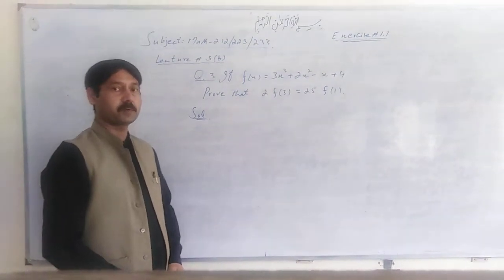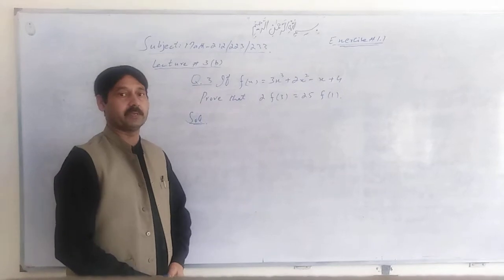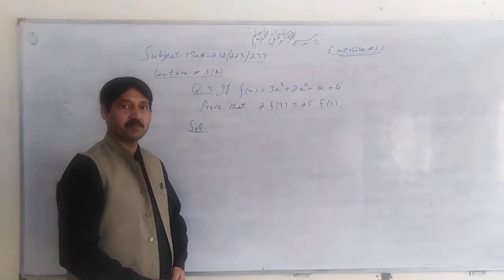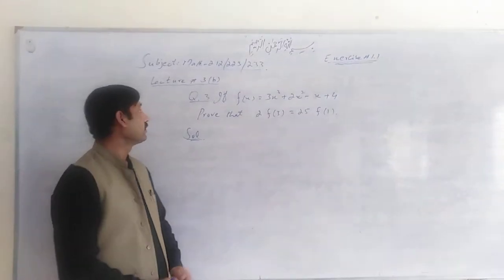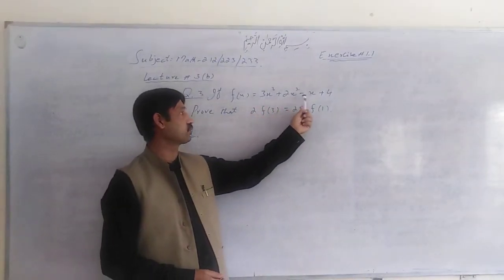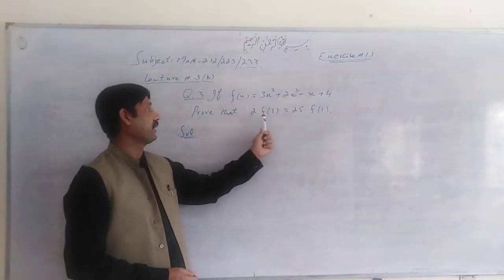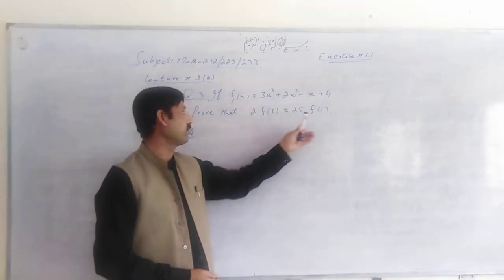Hello everyone, welcome to lecture number 3. The last lecture was 1 by 1 x i star t. The third question is: if f of x is equal to 3x cube plus 2x square minus x plus 4, prove that 2f(3) is equal to 25f(1). The result will be proved.